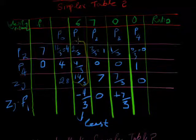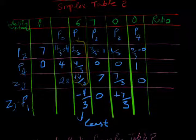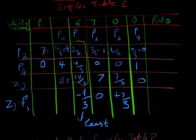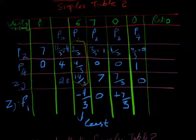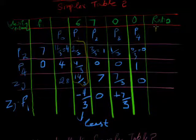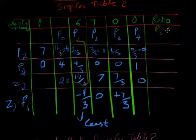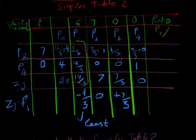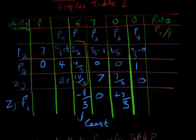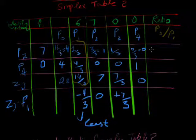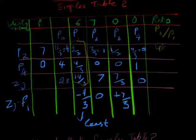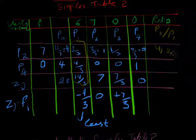For calculating corresponding row, we calculate P₀ divide by selected column P1. And after dividing, 4 divide 2 divide 3, it will be 6.